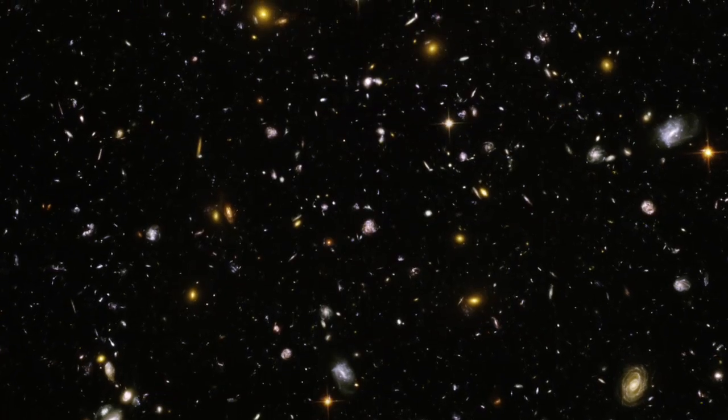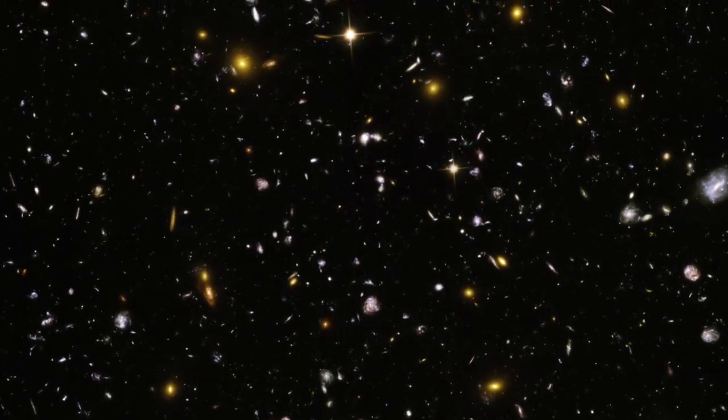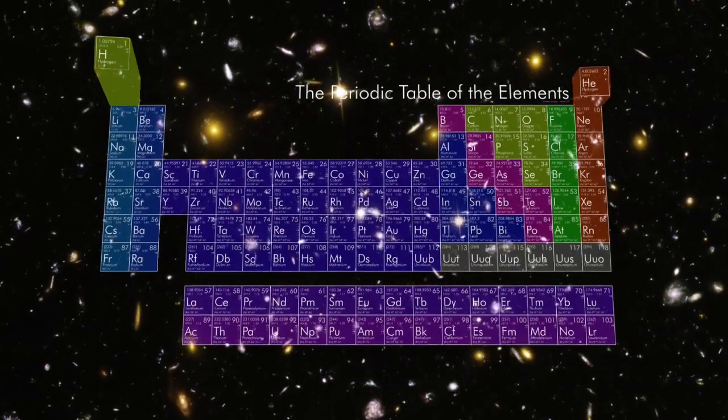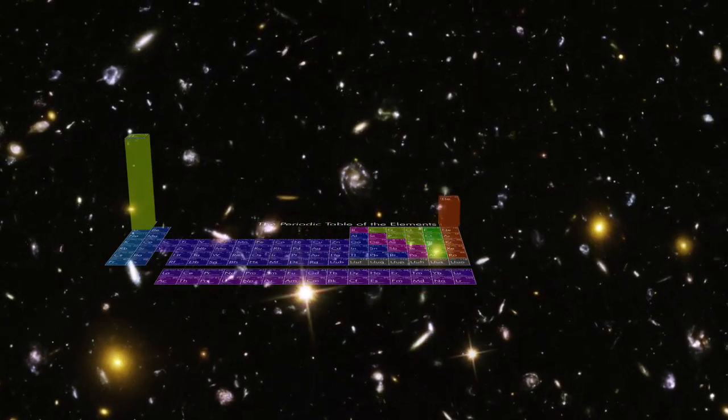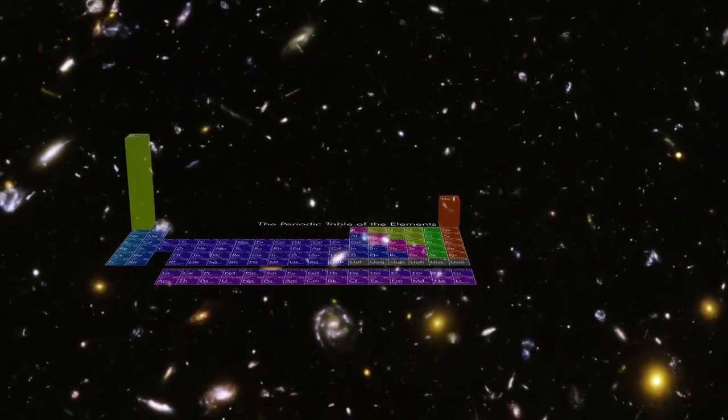What is the universe made of? The vast majority of it consists of the wispy cosmic lightweights hydrogen and helium. Everything else on the periodic table contributes only a small fraction of the whole.